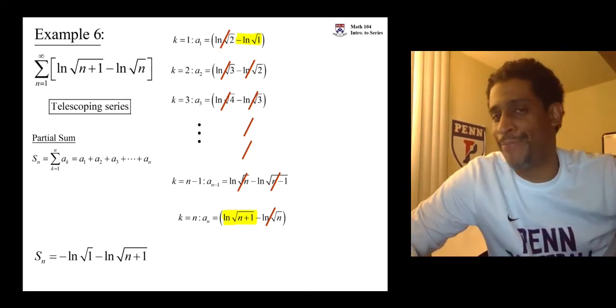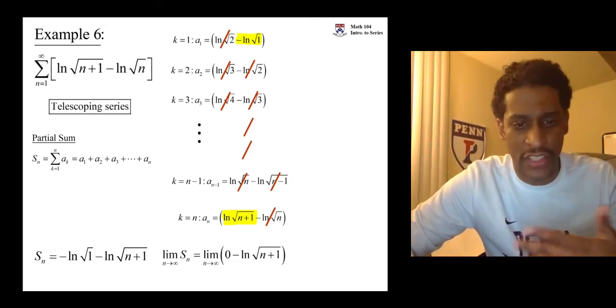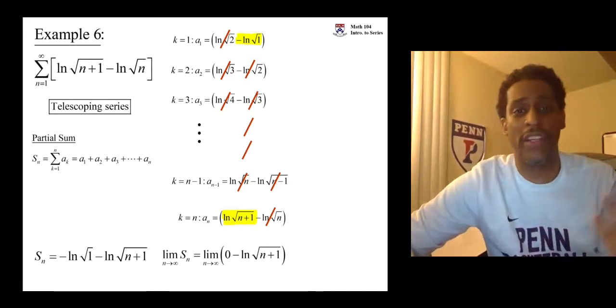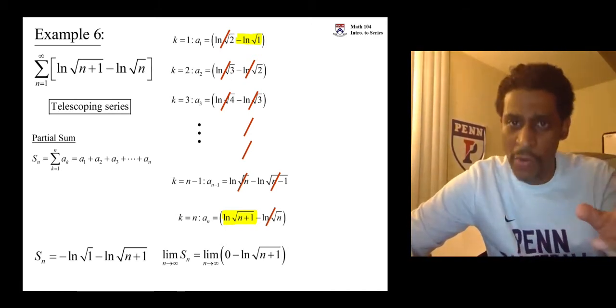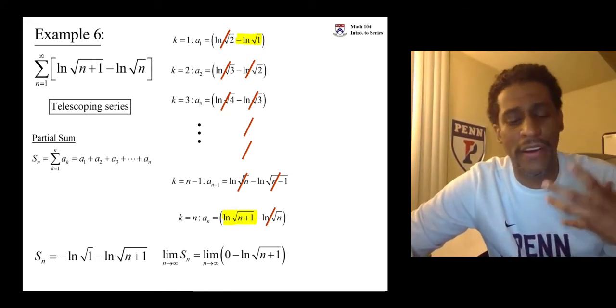What are you supposed to do? You're supposed to take the limit as n goes to infinity on this. I know the first guy is zero. You know, log of one is zero. Square root of one is one, and log of one is zero, negative zero, zero. Zero, for sure. First part is zero. But what about the second part? n gets large.